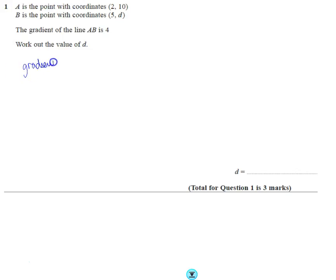So we're going to remember the gradient means the change in y divided by the change in x. We know the answer is 4, so the change in y is d minus 10, that's the difference between those. The change in x is 5 minus 2, the difference in x-coordinates, and I know that answer is 4.